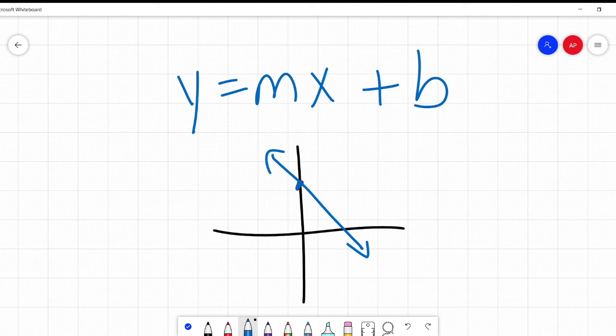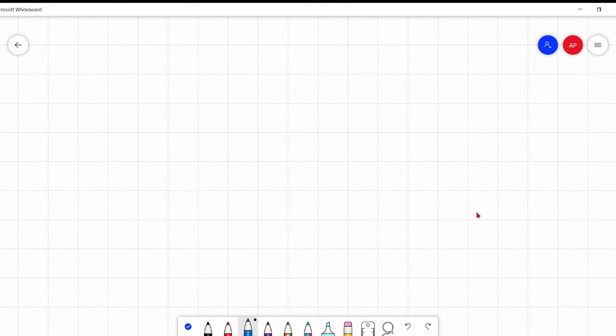Well, what if we're not given the y-intercept? What if we don't know that? Well, there's a couple of options that you have. One of them, which is the one we're talking about today, is the point-slope form of a line.